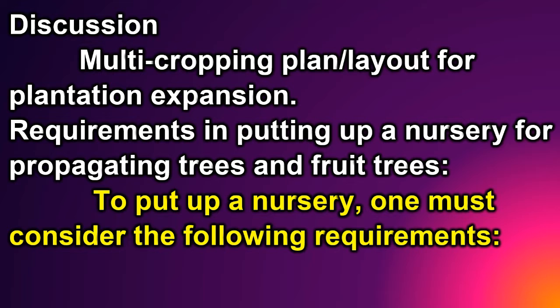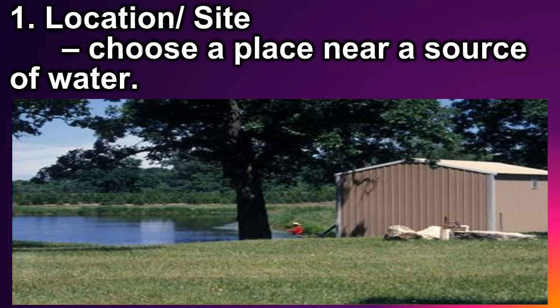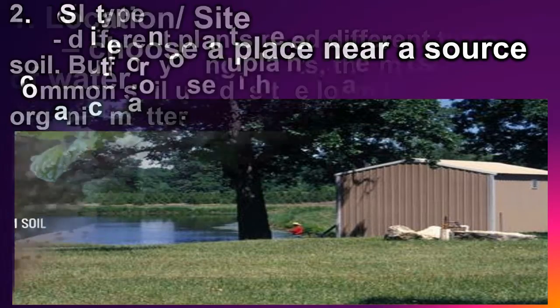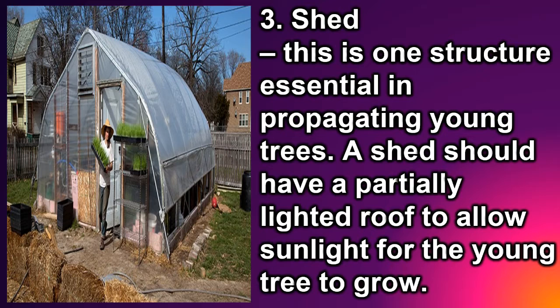To put up a nursery, one must consider the following requirements. One: location or site — choose a place near a source of water. Two: soil type — different plants need different types of soil, but for young plants the most common soil used is the loam type, rich in organic matter.